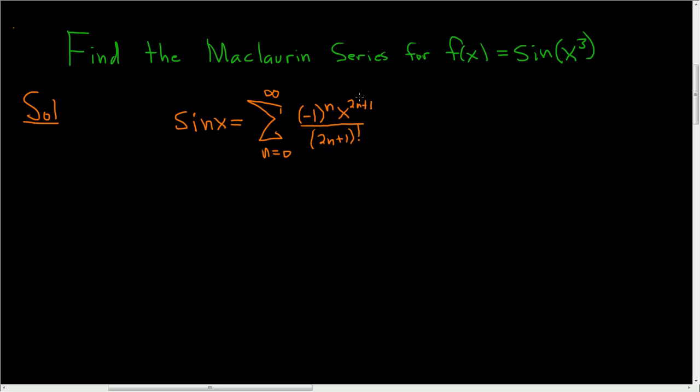If it was cosine, instead of 2n + 1 you would have 2n because cosine is an even function. So easy trick. Sine is odd so you have 2n + 1. Cosine is even so you have 2n's instead of 2n + 1's.